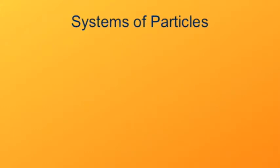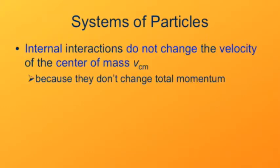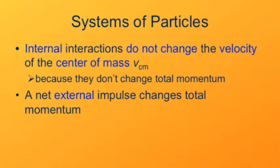One of the nice things about considering the center of mass of a system of particles is that internal interactions don't change the velocity of the center of mass because they don't change the total momentum of the system. What does change the velocity of the center of mass is a net external impulse. When that happens of course the velocity of the center of mass changes accordingly.